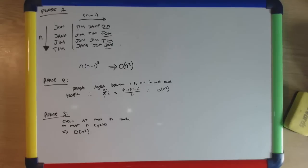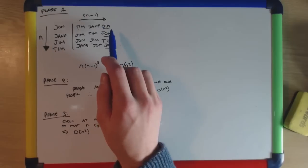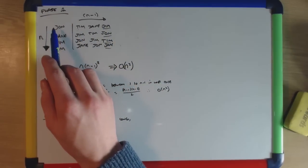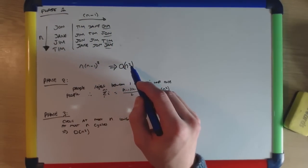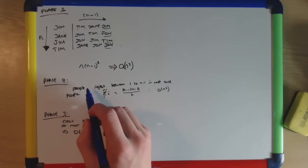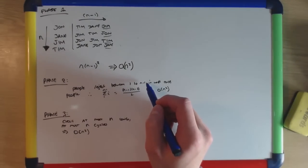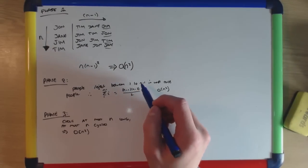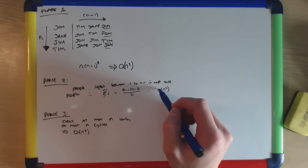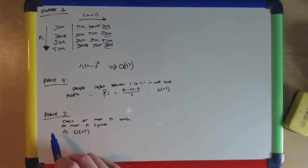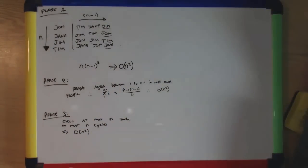Now we consider the complexity of the algorithm. In phase one we have n people, each with n minus one preferences. In the worst case each person will have to propose n minus one times, so the complexity of this phase is quadratic. In phase two, in the worst case people will have to reject n minus one preferences, however each time a person is rejected they are also removed from another preference list, giving a quadratic sum and again quadratic complexity. In phase three we have at most n cycles, each at most n people long, giving quadratic complexity once more.